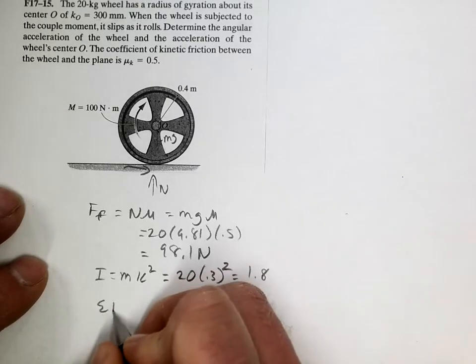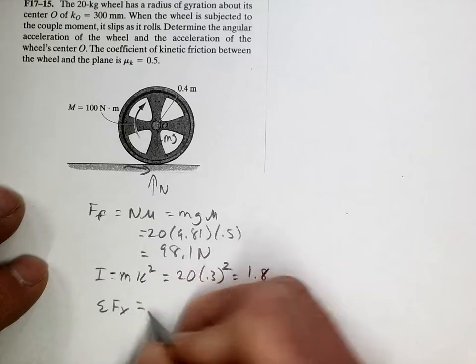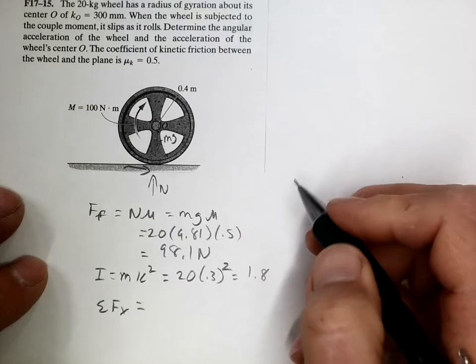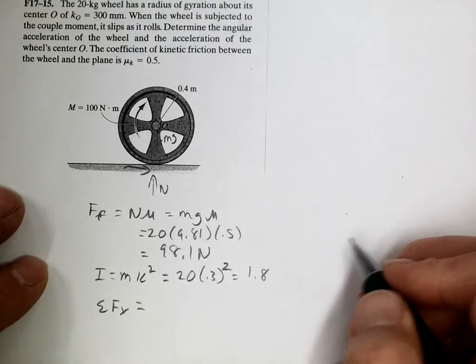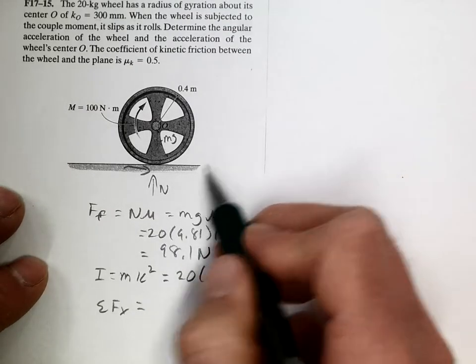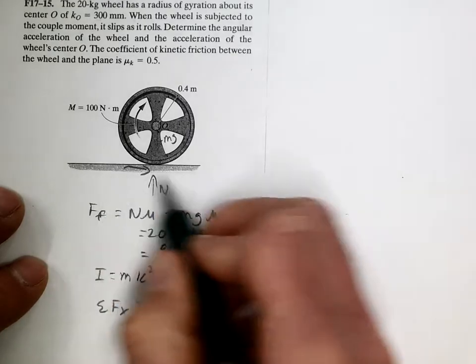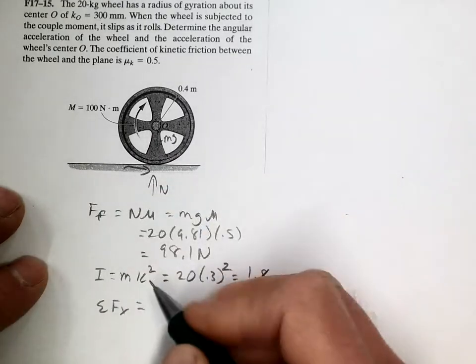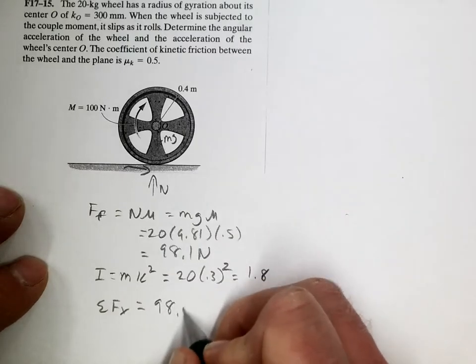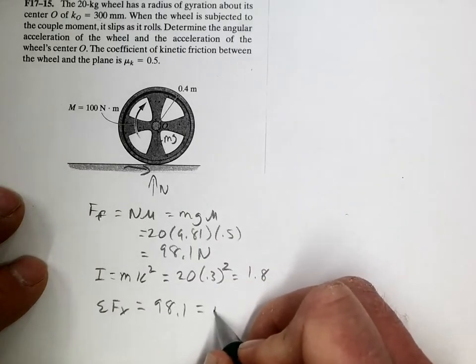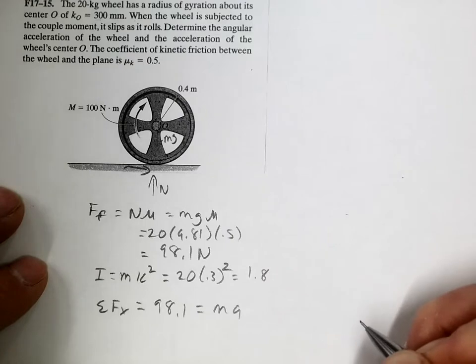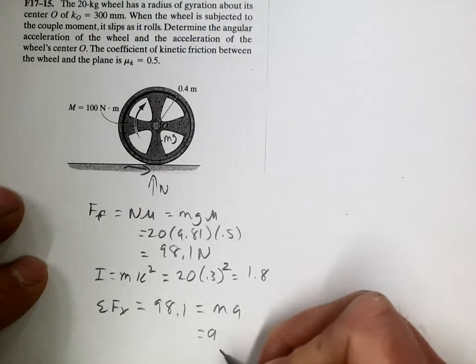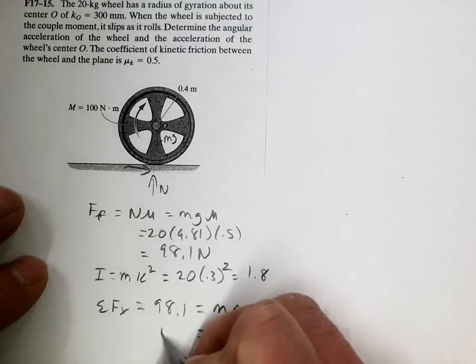Summing the forces in the x direction to get the acceleration of the wheel center, all we have is the force of friction going forward. There are no other forces in the x direction, so 98.1 equals ma. m is 20, therefore a is 4.9.